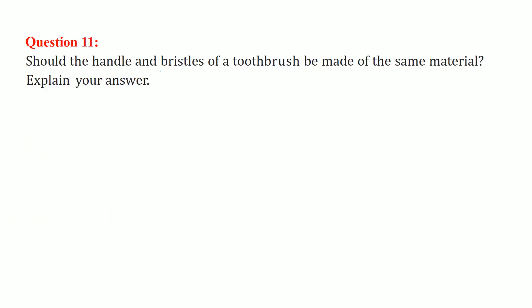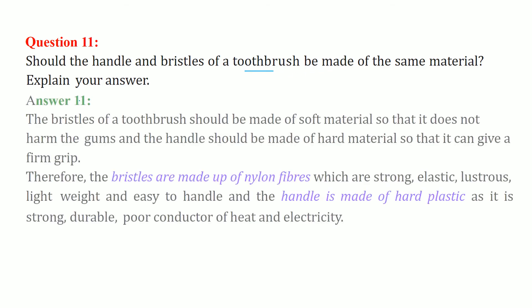Should the handle and bristles of a toothbrush be made of the same material? The bristles go into our mouth and deal with gums and teeth, so they must be soft and not harmful. The bristles are made of nylon fibers, which are strong, elastic, lustrous, lightweight, and easy to handle. The handle should be made of hard plastic because it needs to be strong, durable, and a poor conductor of heat and electricity.